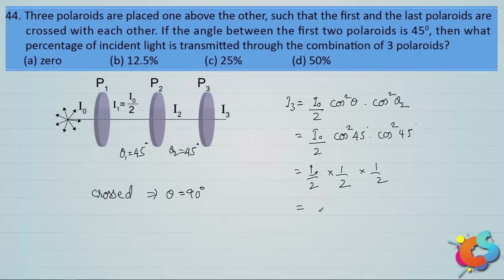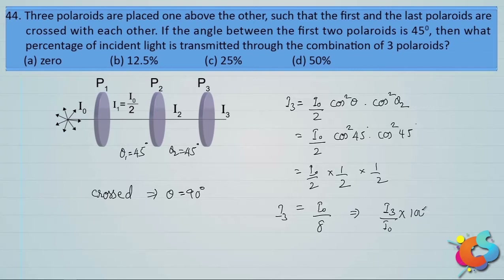The emergent intensity I₃ = I₀/8. The percentage of incident light that emerges is (I₃/I₀) × 100 = (1/8) × 100 = 12.5%. Therefore option B is the correct answer.